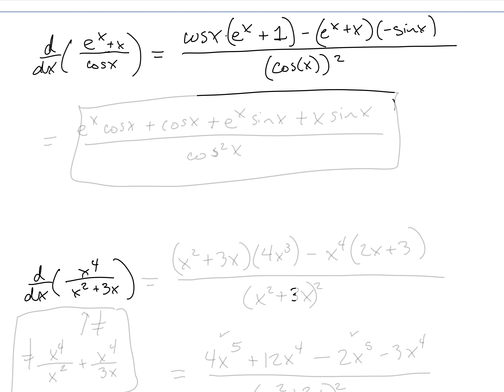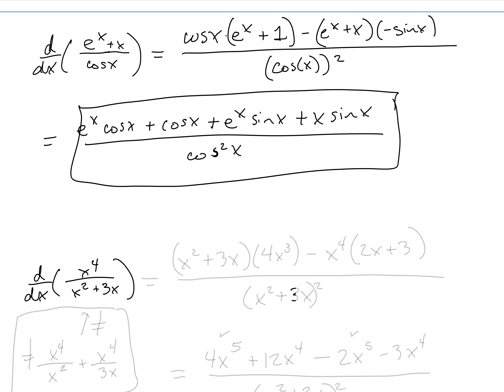We can rewrite that as: e^x·cos(x) + cos(x), and then minus a negative gives us plus e^x·sin(x) plus x·sin(x), all divided by cos²(x), which we often write in this way for trig functions. So that is our derivative.